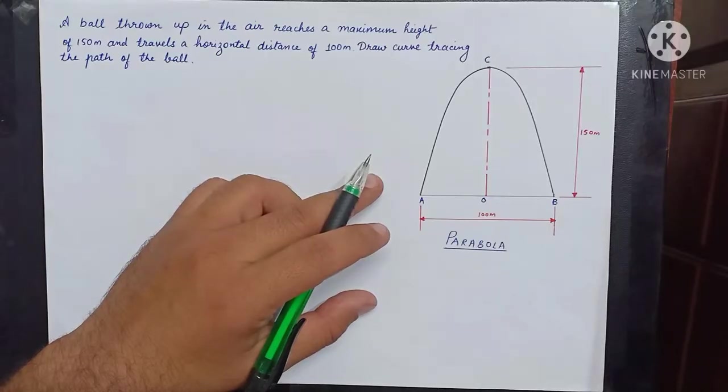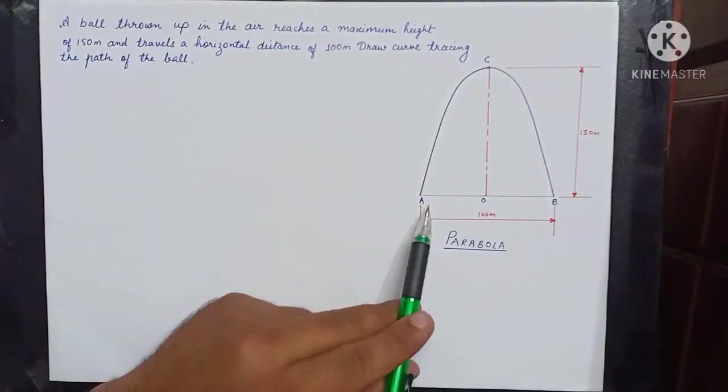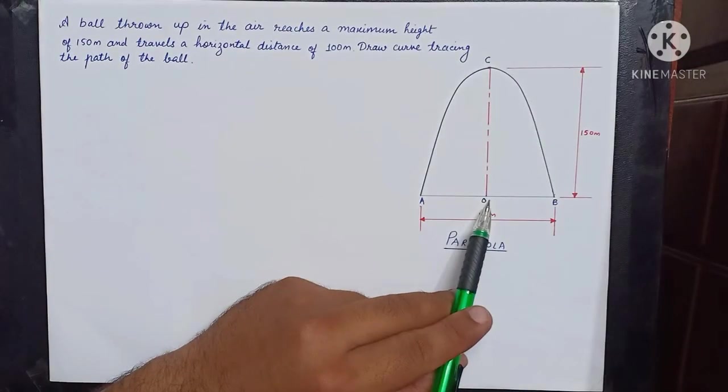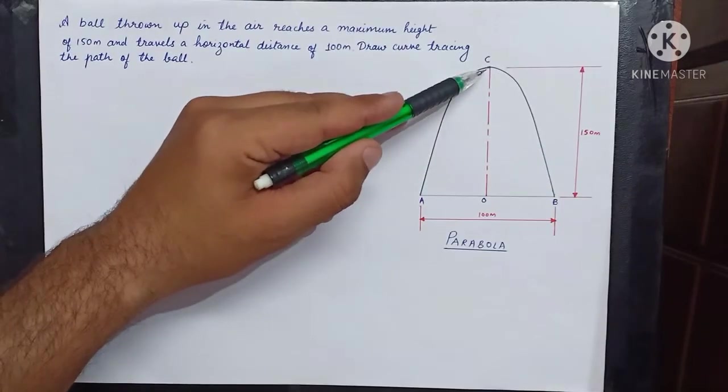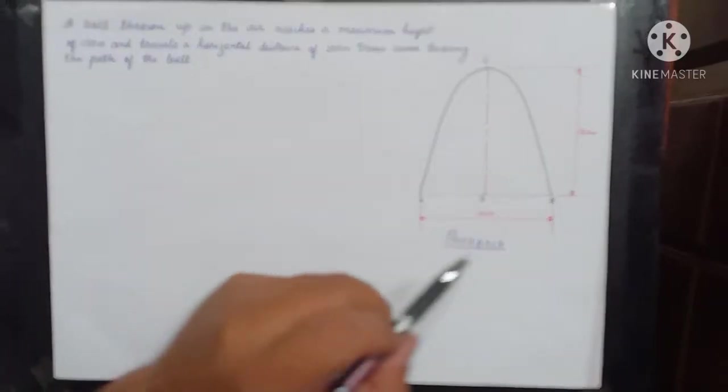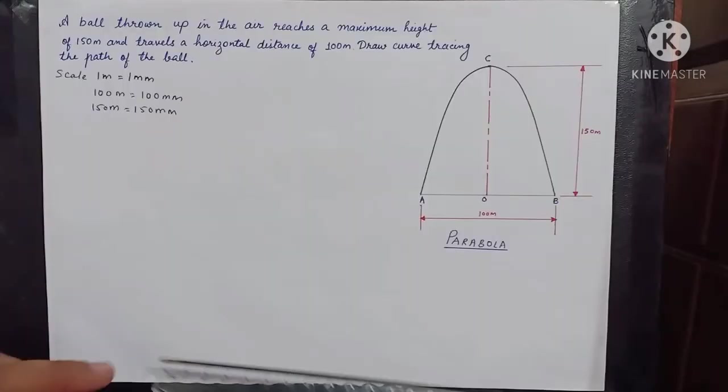We take an example: a ball thrown up in the air reaches a maximum height of 150 meters and travels a horizontal distance of 100 meters. Draw a curve tracing the path of the ball. Here the horizontal distance is 100 meters, and at half distance, that is at point O, we will draw the axis of the parabola. Maximum height is 150 meters.